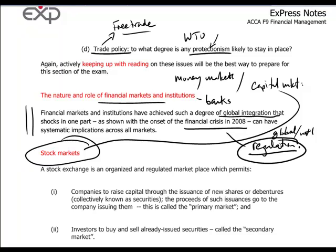Recent controversies underline the importance of financial markets and regulatory moves. These things will have repercussions for the next several years: derivatives losses incurred at JPMorgan Chase, the LIBOR scandal affecting Barclays Bank, and more recently, investigations launched into alleged money laundering at HSBC. These are very important and far-reaching issues which any financial manager or business manager in general should be aware of.